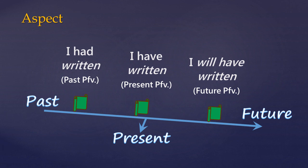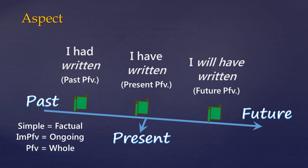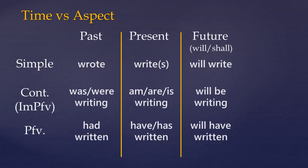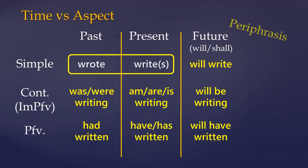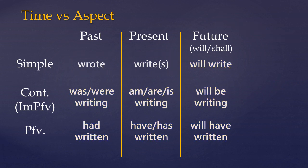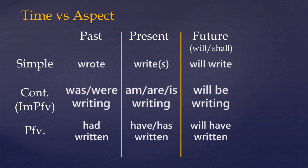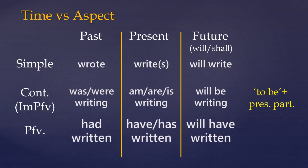Aspect tells us about the status of the activity. In English, there are three aspects: the simple, the imperfective — which is also sometimes called the continuous — and the perfective. In English, we do this through the use of both inflection and combinations of participles with auxiliary verbs. And this combining of verbs, instead of inflection, is called periphrasis. It's only the simple past and simple present which are indicated through inflection alone. The continuous aspect is formed by a version of the verb 'to be' and a present participle. And the perfective aspect is formed by a version of the verb 'to have' and a past participle.